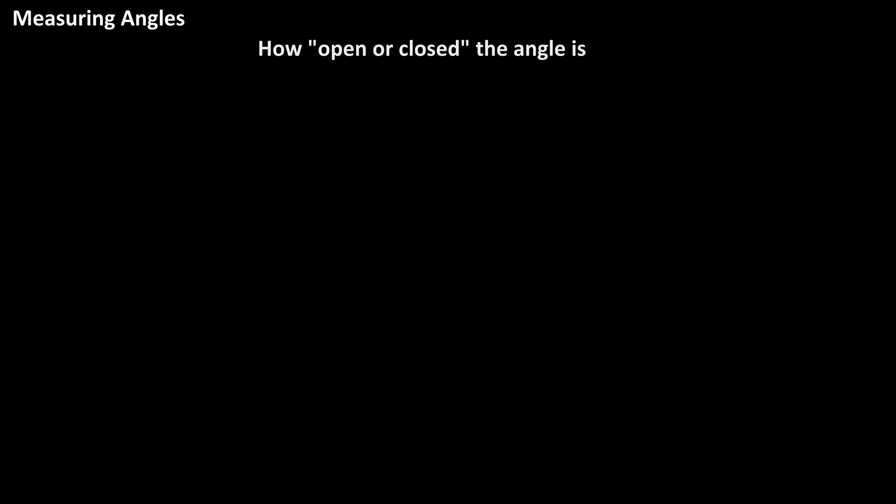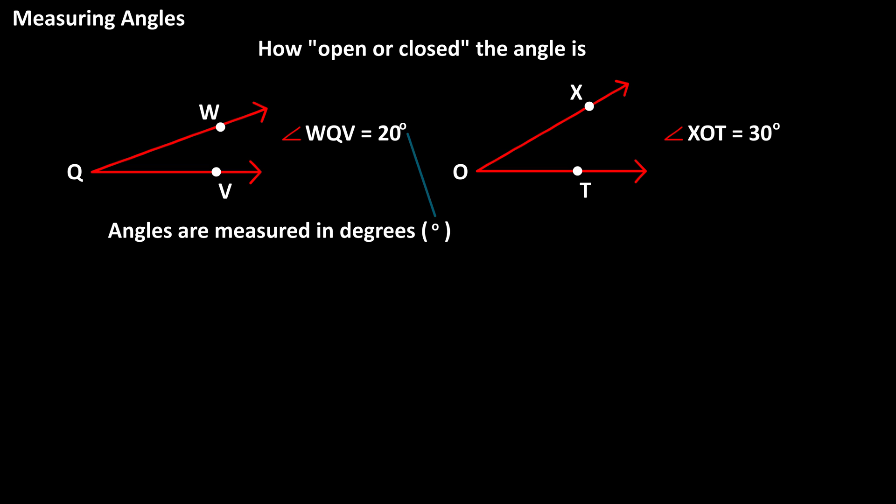Angles are measured based on how open or closed they are. For instance, this angle is not very open, and its measurement happens to be 20 degrees. And this angle is more open, and its measurement is 30 degrees. Angle measurements are in the form of degrees, which is represented by this little circle symbol you see here.